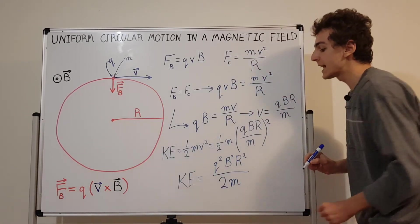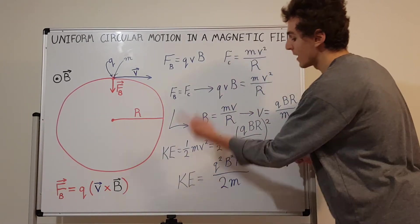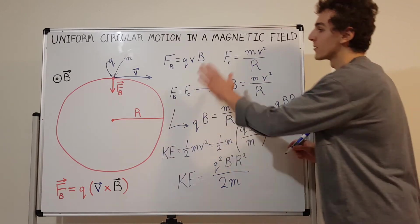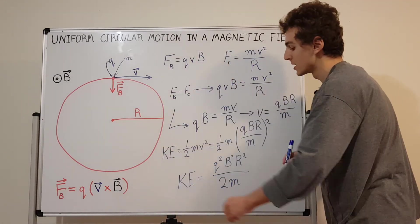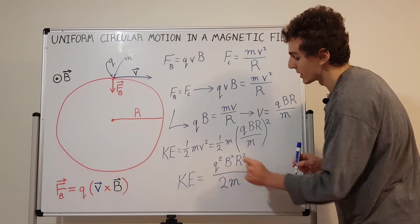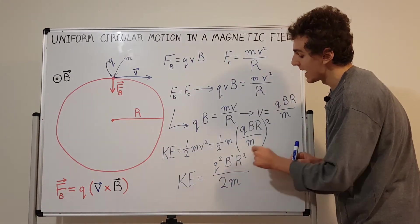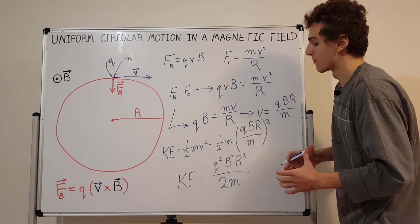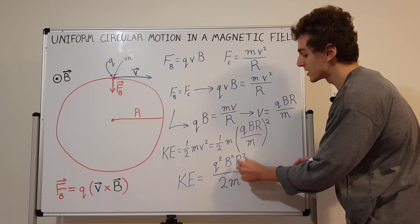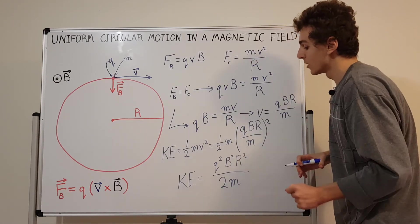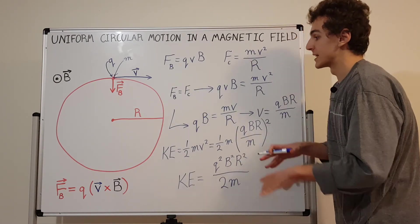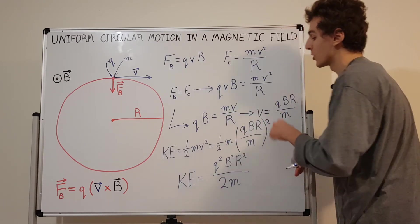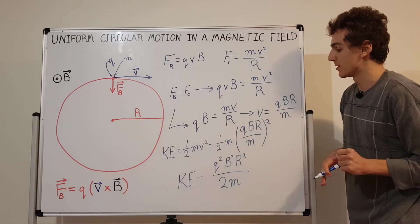This is the kinetic energy of the particle in terms of the relevant quantities: the charge, the mass, the magnetic field strength, and also the size of the circular trajectory. So the size of the circle determines both the kinetic energy and the velocity — if the velocity is determined then the kinetic energy is also determined.